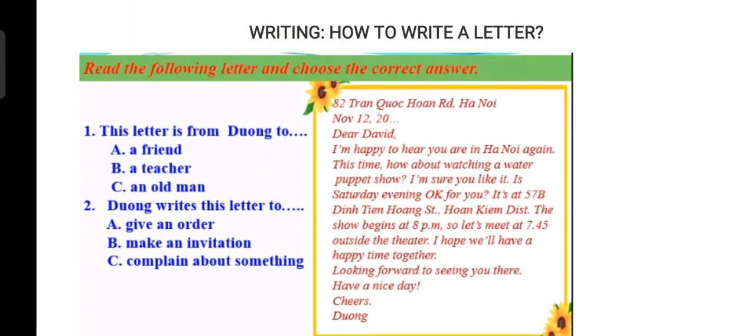Because Dương writes an informal letter of invitation, he writes to a friend. And why did Dương send it to a friend? Because Dương writes an informal letter of invitation, so this letter is from Dương to a friend.